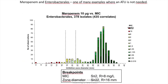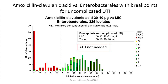Here is a different test: meropenem 10-microgram disc versus MIC in a mixture of Enterobacteriales — 378 different isolates. You can see that the greens are to the right, the reds are to the left, and the yellows representing the I category are right where they should be — again, a test without any significant problems. Another one: amoxicillin-clavulanic acid with a urinary tract infection breakpoint of 32 mg/L. Again, greens to the right, reds to the left, and very little overlap — a fairly robust and okay test, provided you have calibrated your own lab.